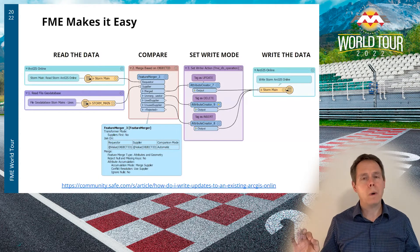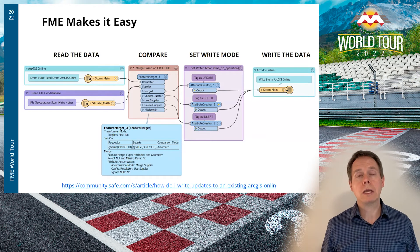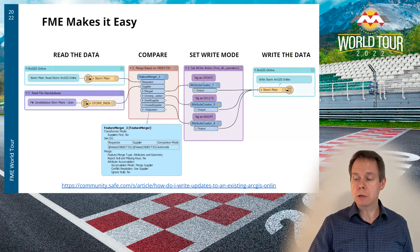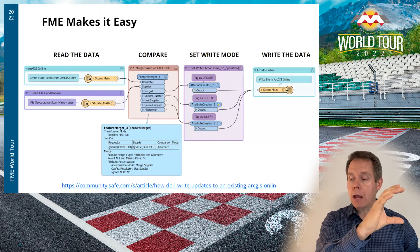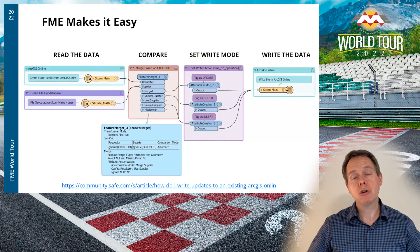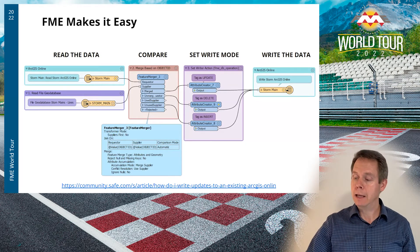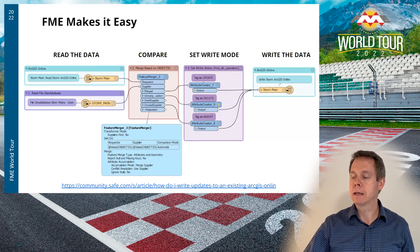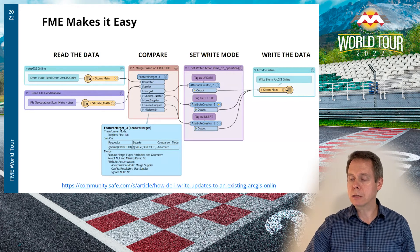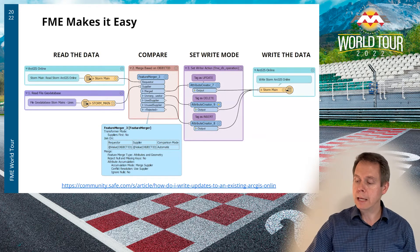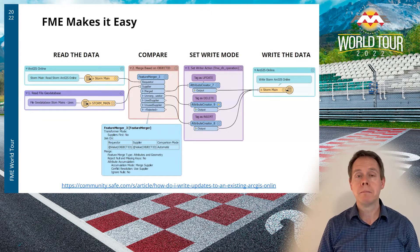FME to the rescue. FME makes it very easy. Here you see the simple workflow I use to compare my file geodatabase — in this case storm data — against my ArcGIS Online storm data. I compare them using a Feature Merger that compares the Object ID. If the Object ID already exists it goes to update; if it no longer exists in the file geodatabase it gets deleted; if it exists in the geodatabase but not in ArcGIS Online it gets inserted. That's all the feature and attribute creators are doing, pushing the result up to ArcGIS Online.